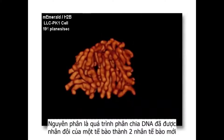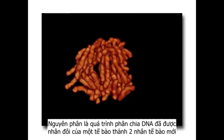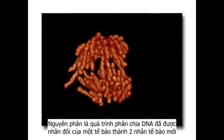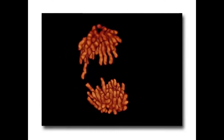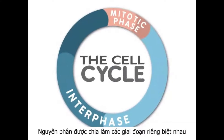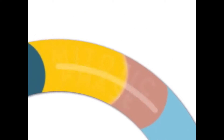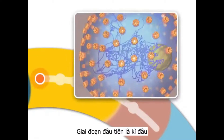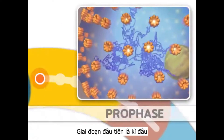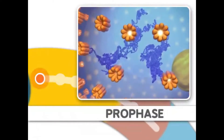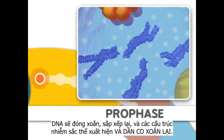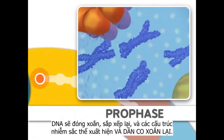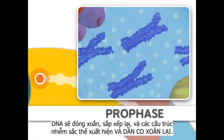Mitosis is the process of dividing the duplicated DNA of a cell into two new nuclei. Mitosis is split into distinct stages. The first stage is prophase, where the DNA condenses, organizes, and the classic chromosome structure appears.